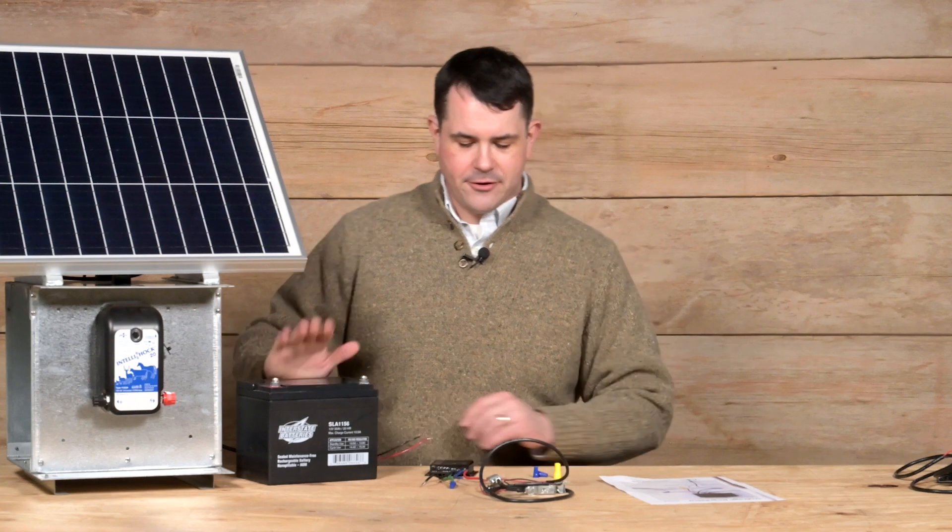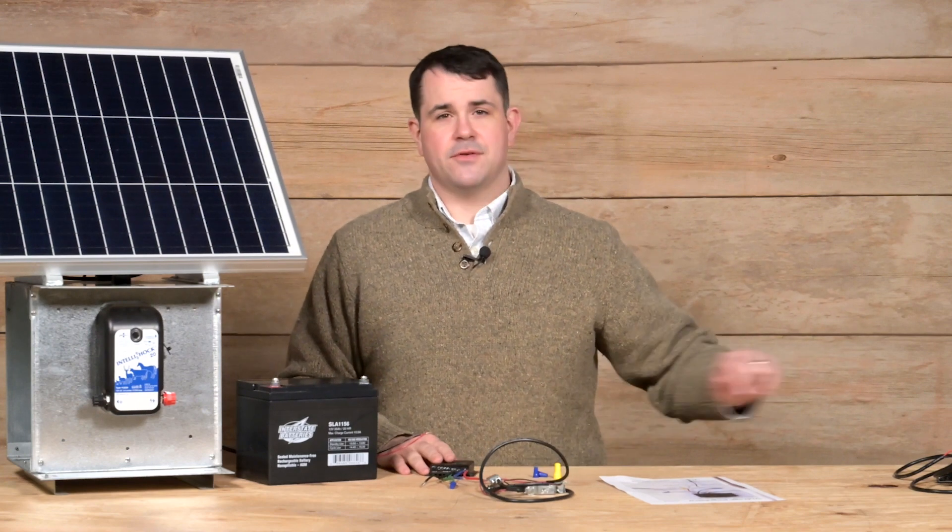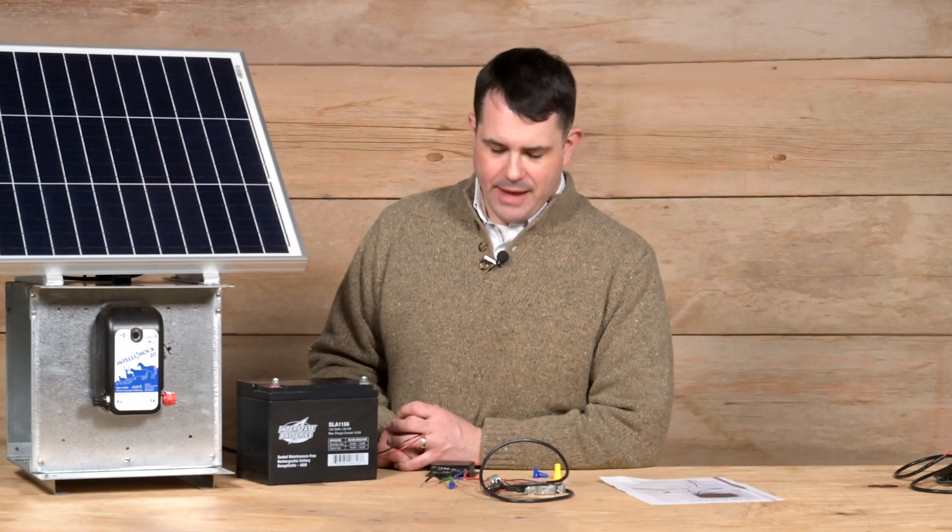I have a 35 amp hour battery, voltage regulator, some battery leads, and then off to the side I have my 12 volt leads to go from the energizer to the battery.